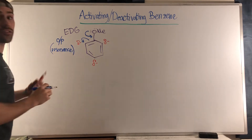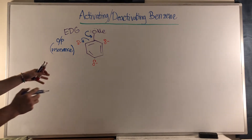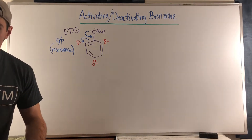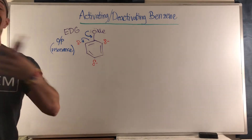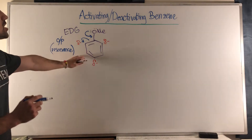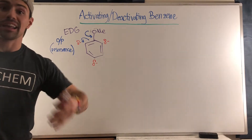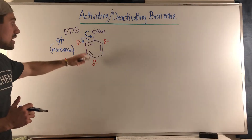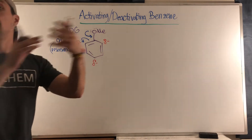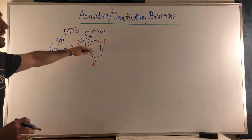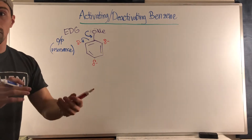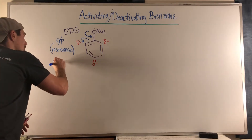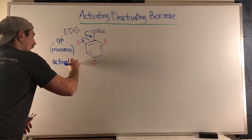It directs ortho/para via resonance. While the oxygen isn't the biggest fan of that positive charge, it's okay with putting its electron density into the ring. Since this is EAS — electrophilic aromatic substitution — we're actually putting more negative charge into our ring, and EAS means we're grabbing positive stuff. So this ring is going to be better at the next EAS reaction. Not only are we directing ortho/para, but we are activating the benzene ring, and that is also done through resonance.